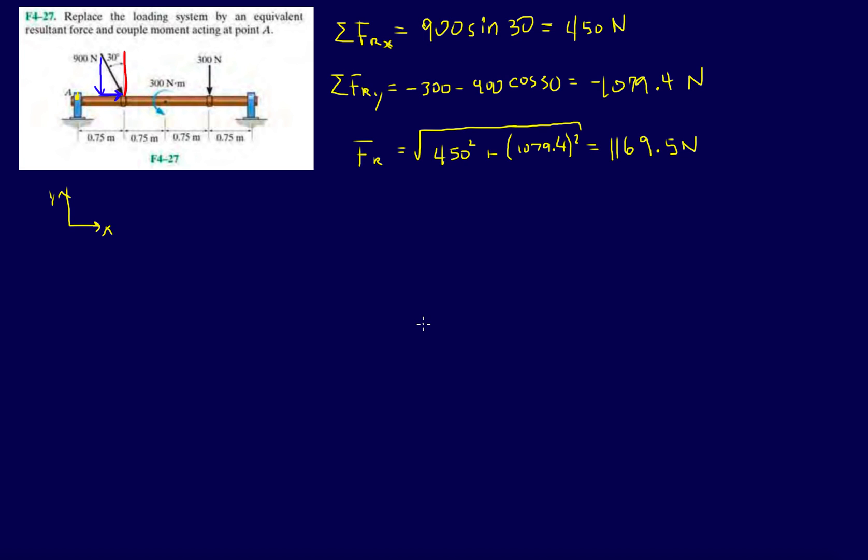Now we have the magnitude. That leaves us with needing the angle that it makes. Theta is inverse tangent.